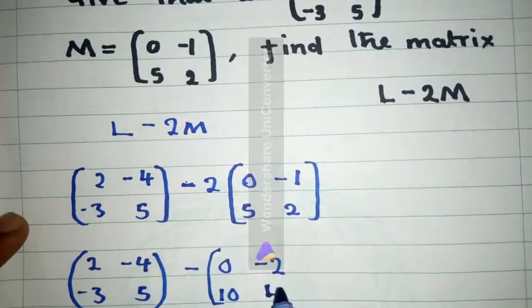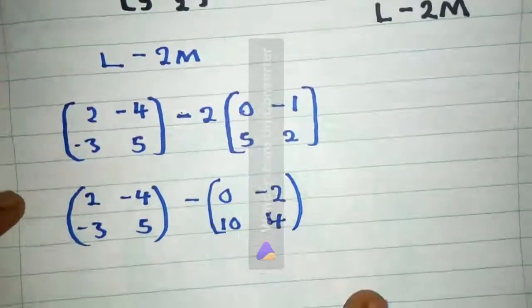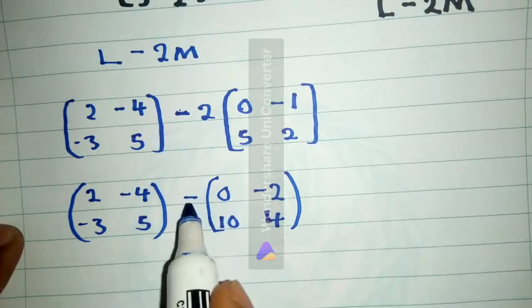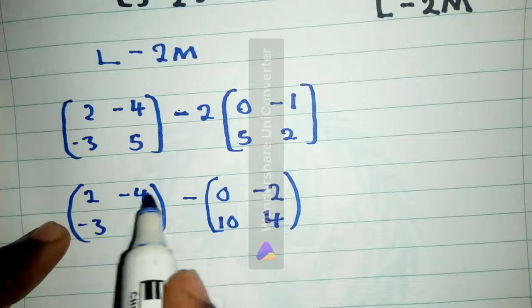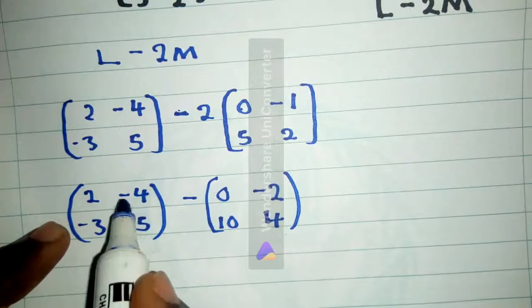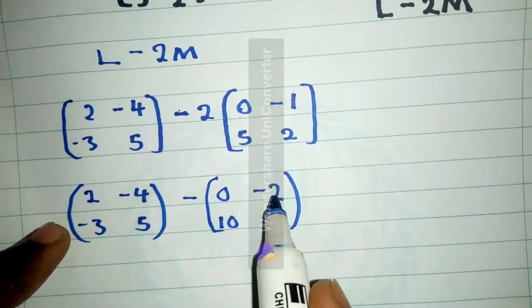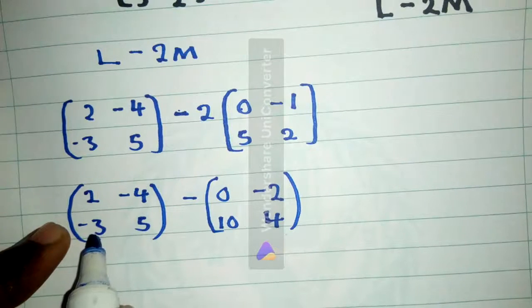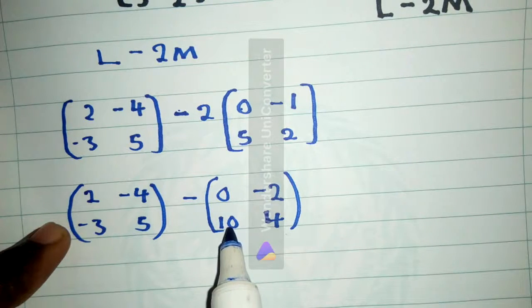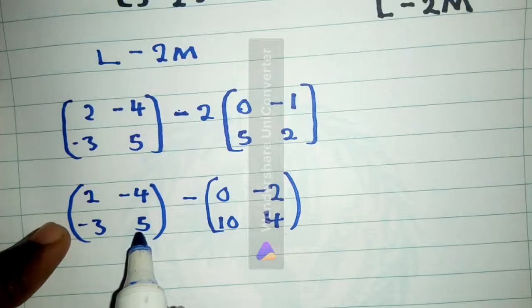All right, so now from here, if you see these are matrices, subtract this 0 from this, and then here we'll move this negative 4 together with negative 2, negative 3 with 10, 5 with 4.